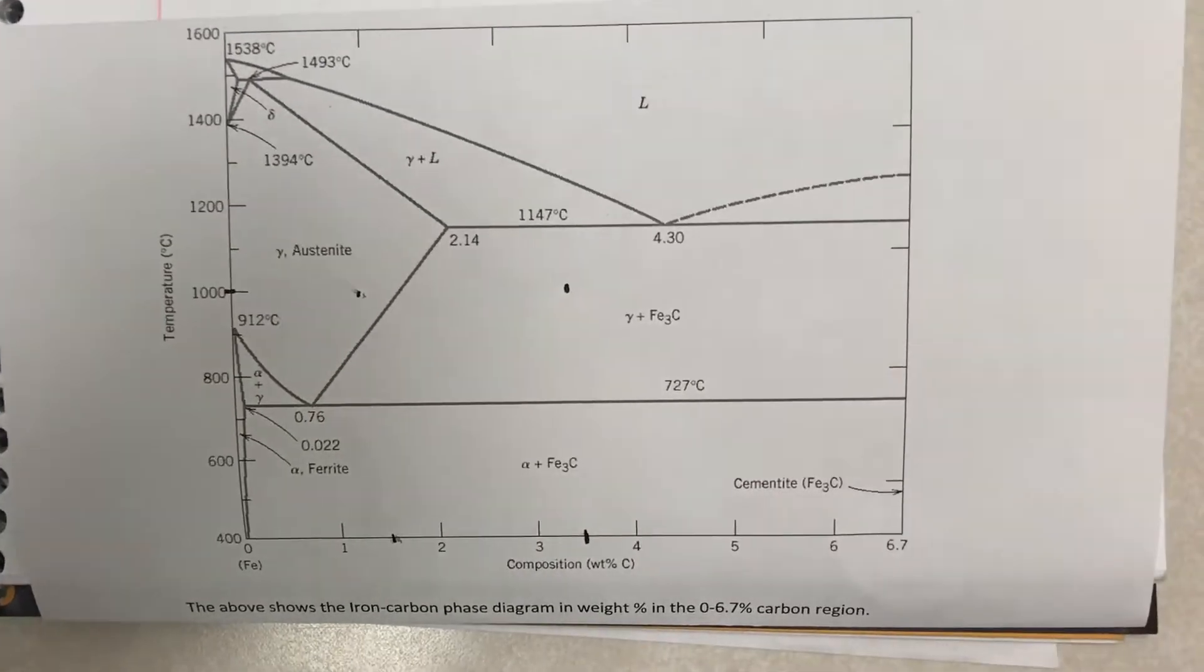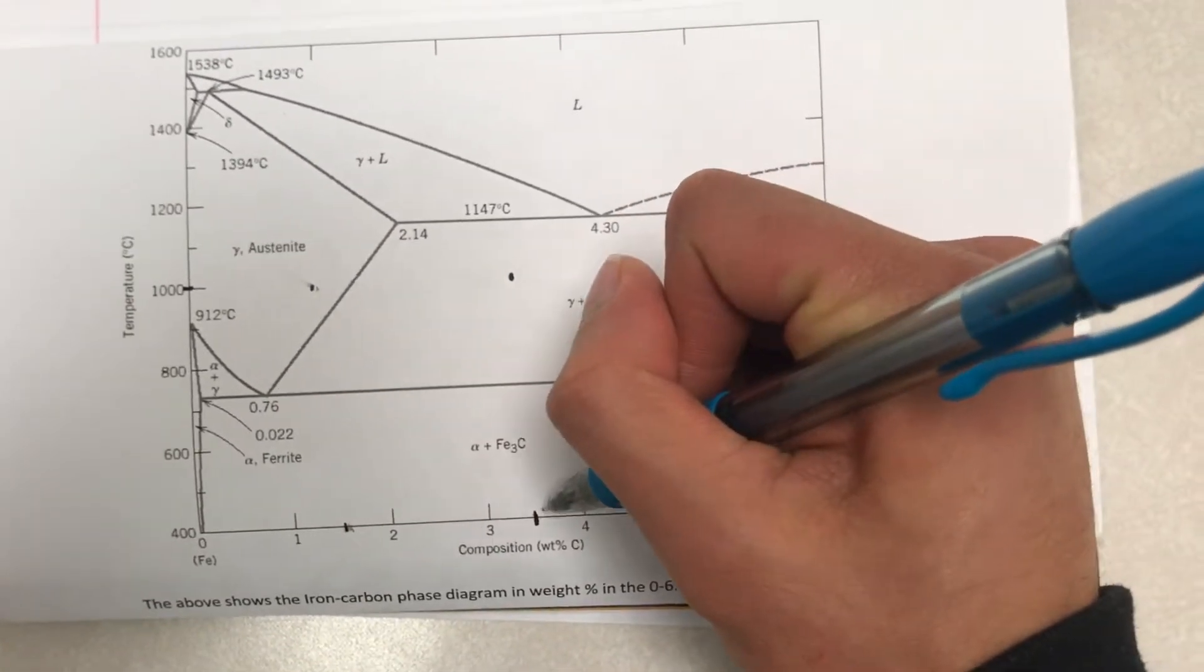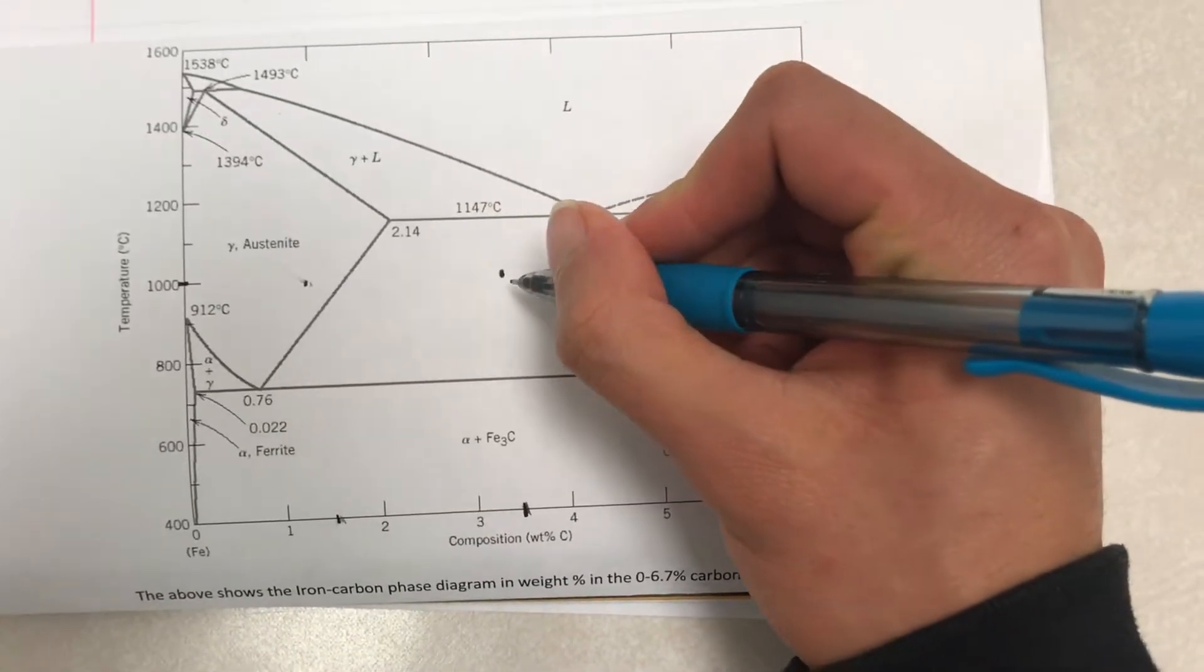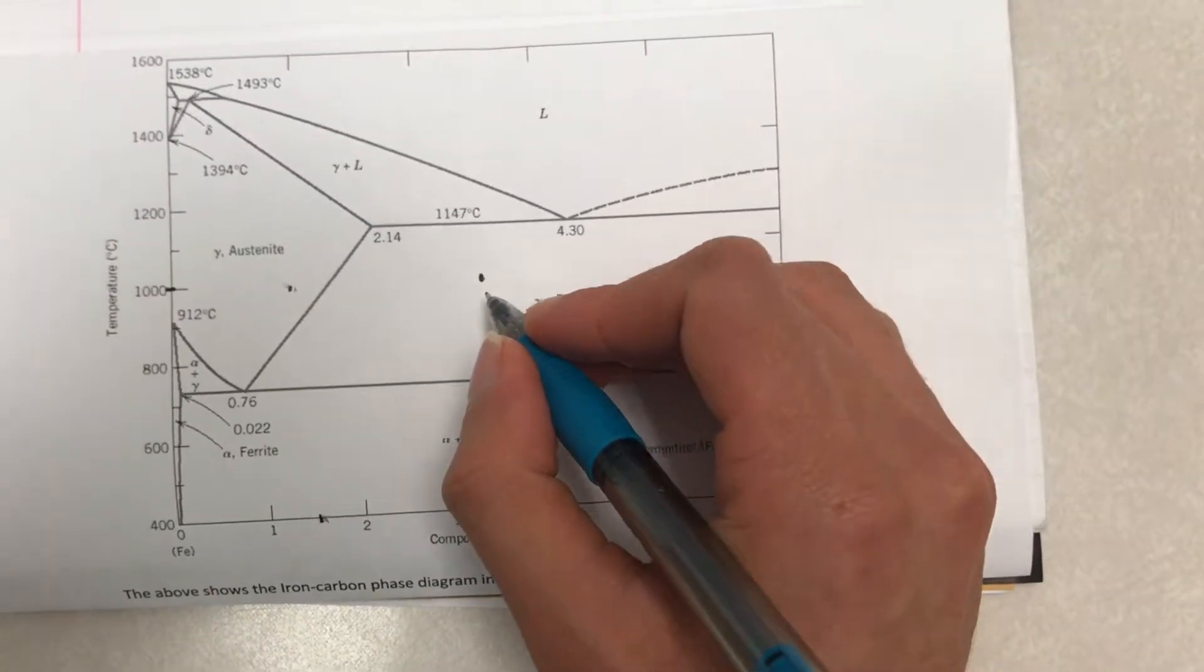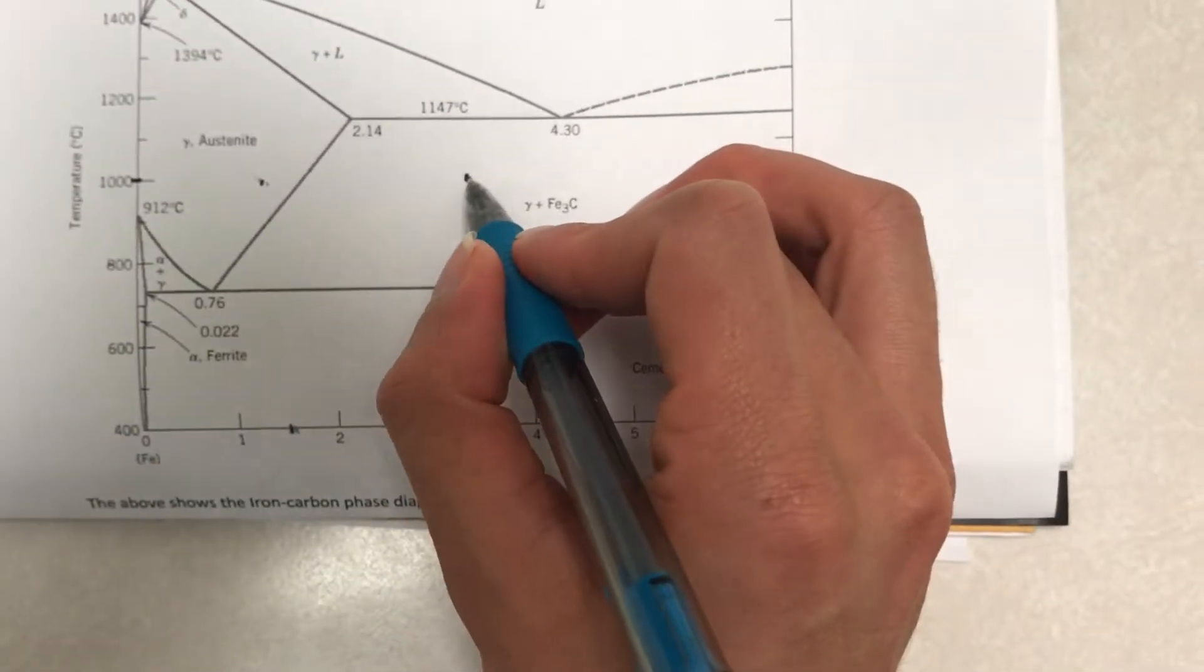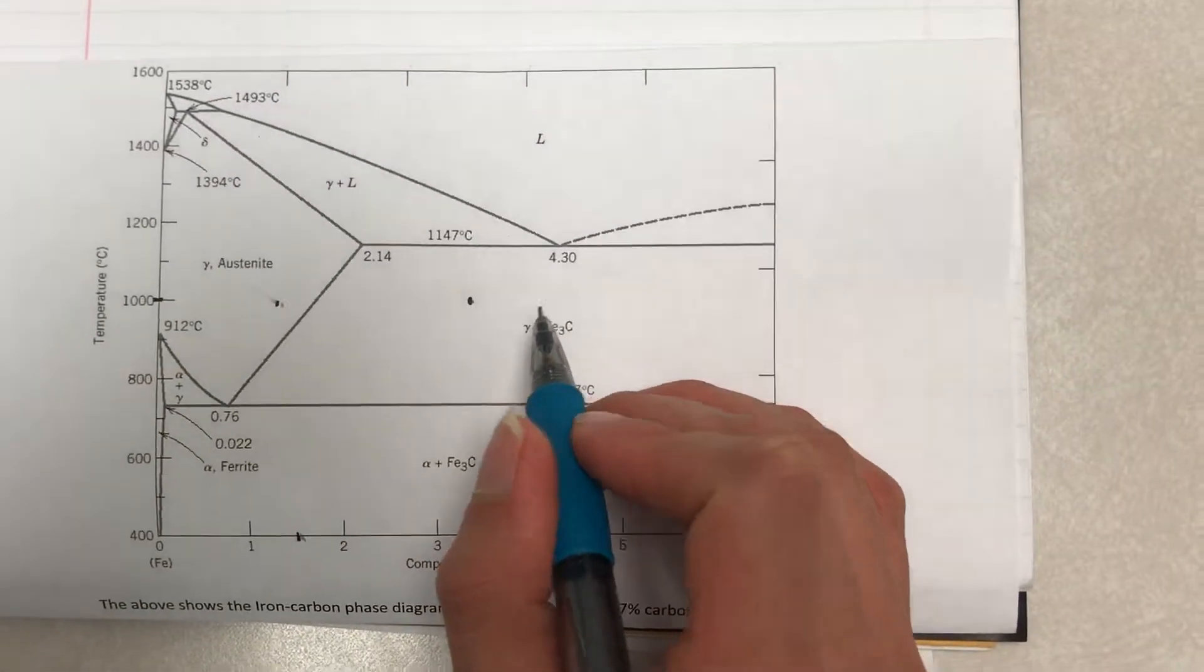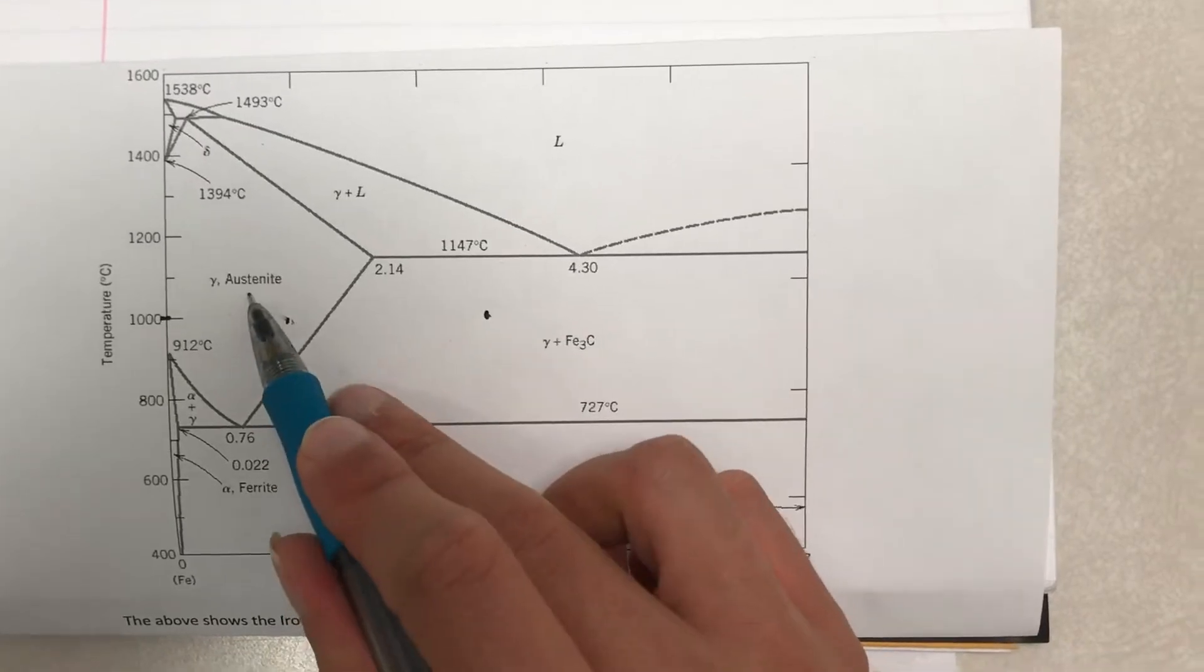However, if you want a more complicated question to find out what phases are present at 3.5% carbon at a temperature of 1000 degrees Celsius, it is a little bit more tricky. So first, to find the composition, we have to identify what phases comprise this location. So this combines a phase of Austenite and Cementite right here.